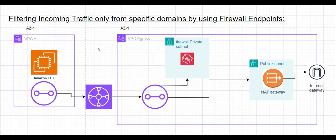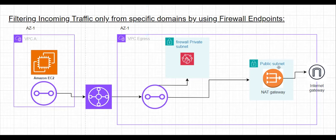For this lab the important point is we need firewall endpoints. In order to get those firewall endpoints we need to create a firewall. First you create firewall rules, then by combining all those rules you create a firewall policy, and by using that policy you create the firewall. That firewall contains the endpoints you can use in your application.